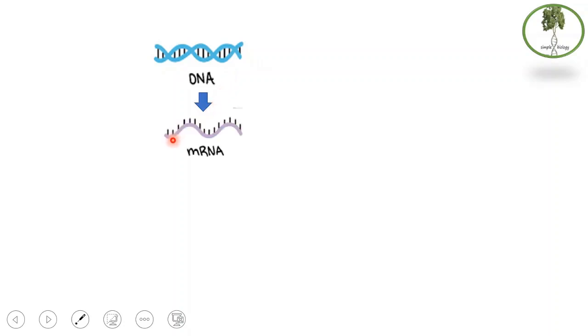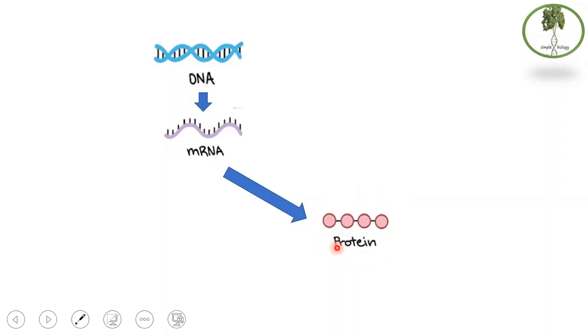Now let's talk about how a protein is made. The genes are located on the DNA — these are segments of DNA. This DNA is in the nucleus and cannot go out of the nucleus, so it has to be copied into a single-stranded mRNA. The mRNA is a copy of the code in the gene, and it carries instructions to make a certain protein, moving to the cytoplasm to be translated into a protein.